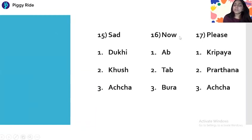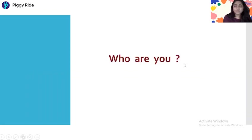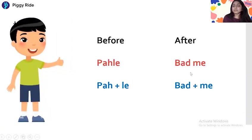Sad means Dukhi. Now means Ab. Please means Kripya. Brave means Bahadur. Clever means Chatur. We means Hum. Who are you? In Hindi: Aap Kaun hoon / Tum Kaun hoon. I am Rahul: Main Rahul hoon. This is the correct form — Main Rahul hoon.